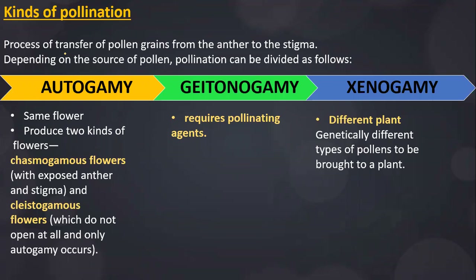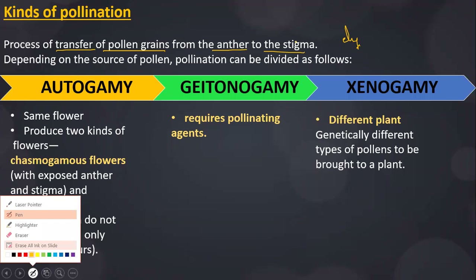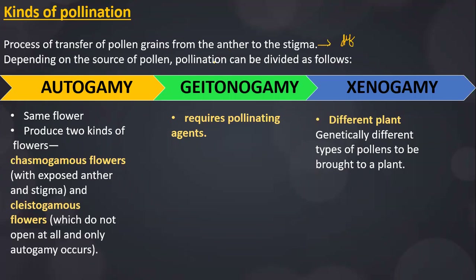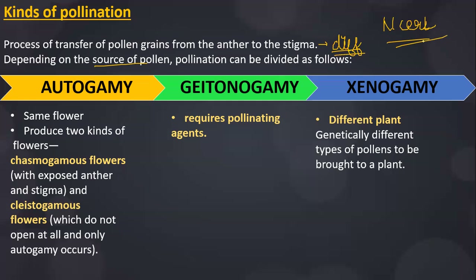What is pollination? Pollination is the transfer of pollen grains from the anther to the stigma. Depending upon the source of pollen, according to your NCERT, pollination can be divided into autogamy, geitonogamy, and xenogamy.